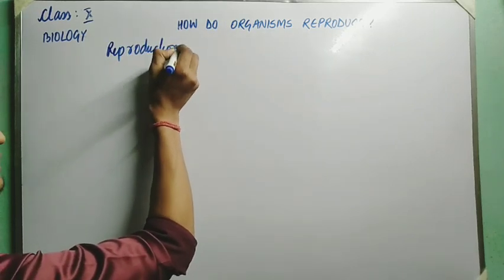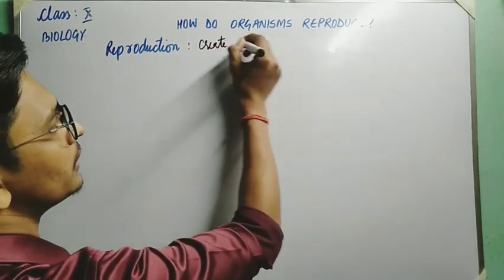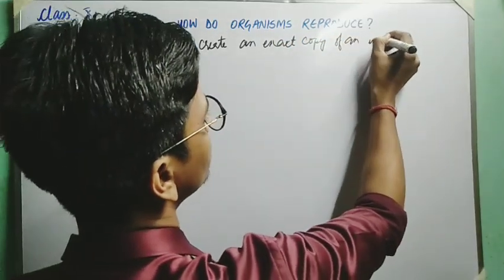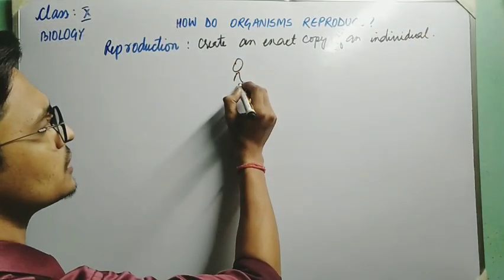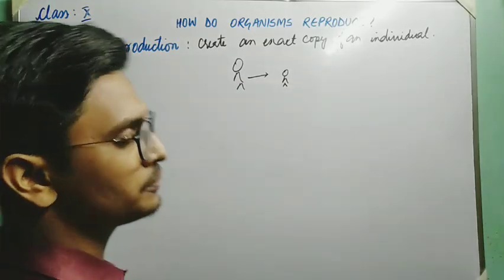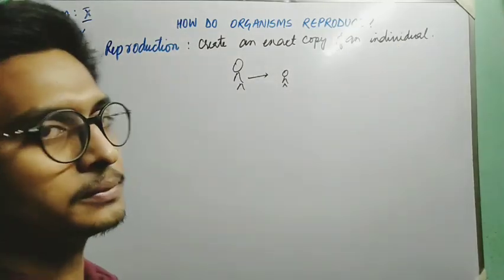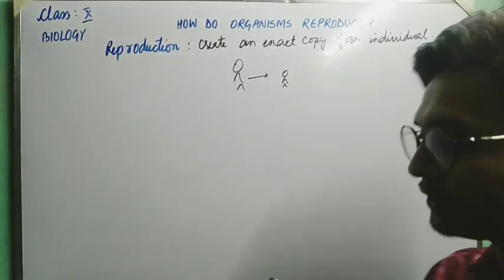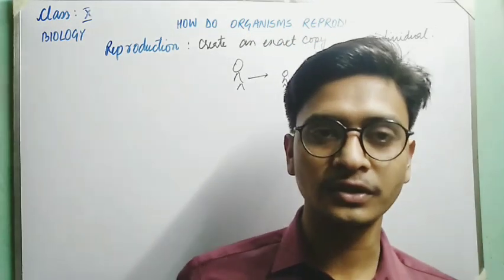What is meant by reproduction? Reproduction means to create an exact copy of an individual. If there is one individual — say a human being — we have to produce another similar organism of that kind. So reproduction means the production of similar kind or its offspring.